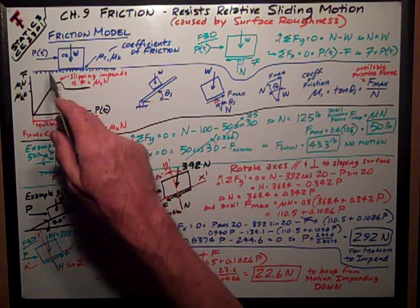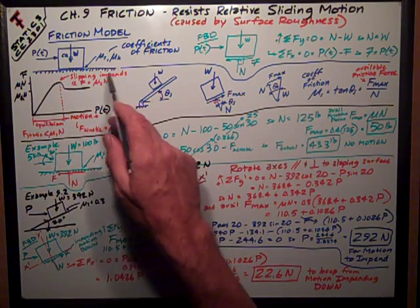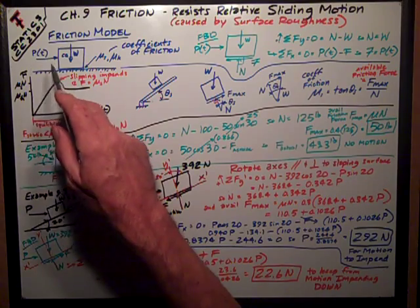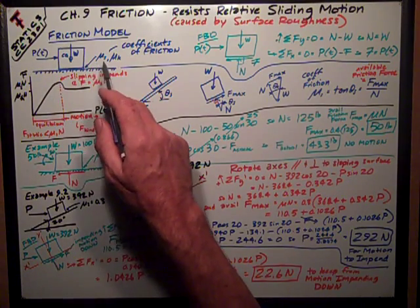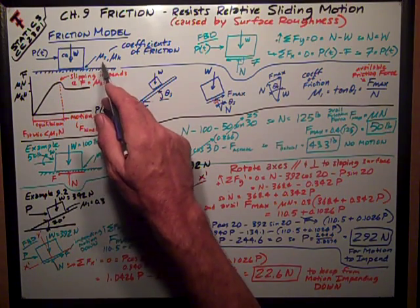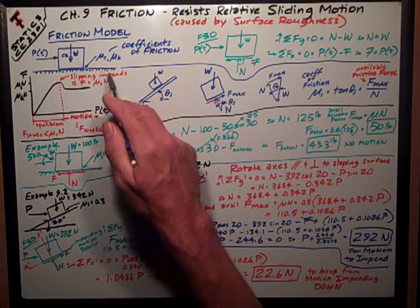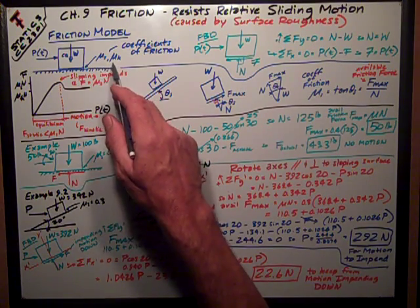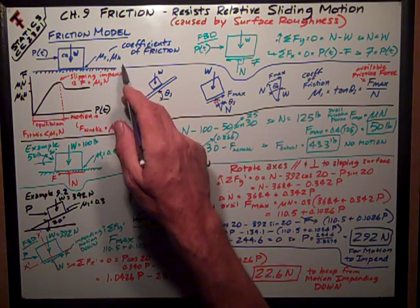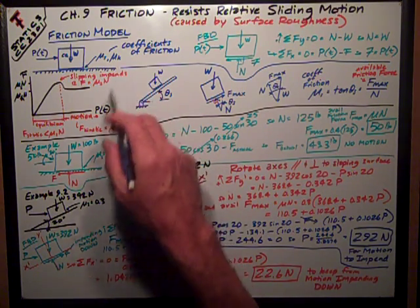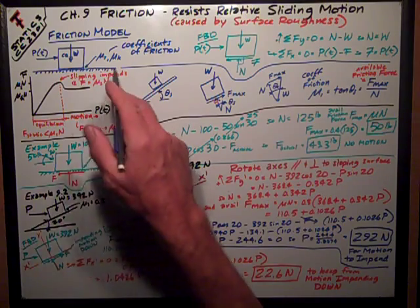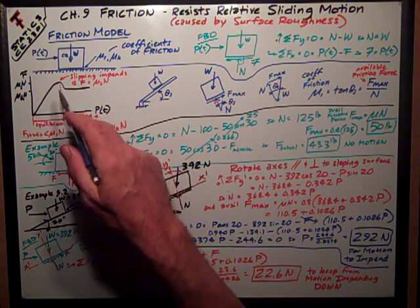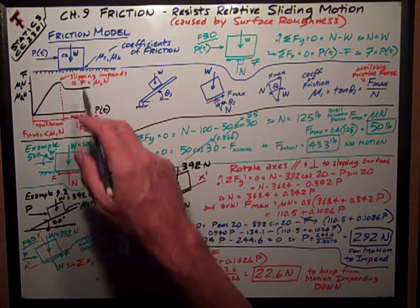We have mu sub s, the static coefficient of friction, and mu sub k, the kinetic coefficient of friction. We'll talk about those two things and how they relate here in a second.